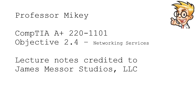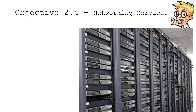Welcome to the CompTIA A-plus 220-1101, or Core 1 exam. This is Objective 2.4, Networking Services. If you ever worked in a data center or if you have an organization that has a data center, then this picture probably looks familiar. It's row after row of these 19-inch racks, and those racks have inside of them many different types of computing systems. In this module we'll look at many different kinds of network services and see what types of things might be running inside of the company's data center.